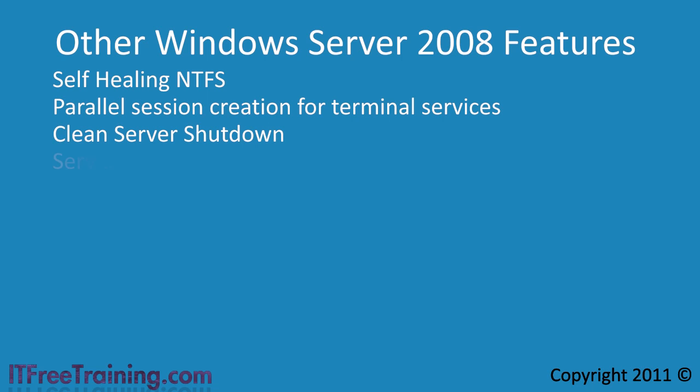The next feature is Server Core. Server Core is a version of Windows Server 2008 without the graphical interface. Not having the graphical interface means the server has less software and drivers, which reduces the amount of memory required to run the server and also reduces the attack surface. The attack surface is defined as the number of ports, services, and software that an attacker could use to compromise a system. More software running means more software that needs to be patched and has the potential to have a security issue that a hacker may be able to exploit.